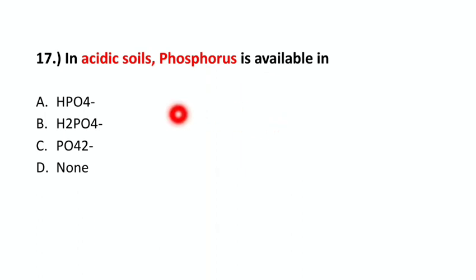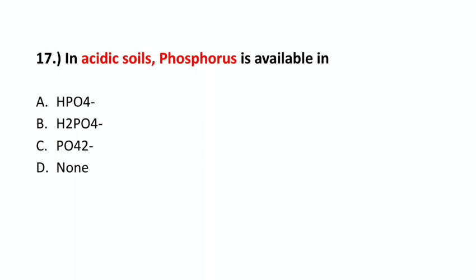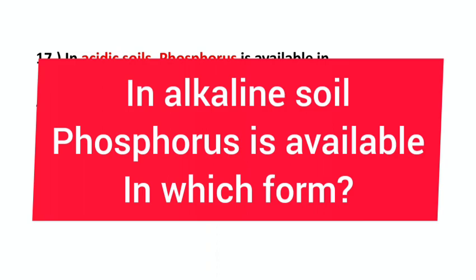Question number 17: In acidic soil, phosphorus is available in which form? The correct option is option B – H2PO4⁻. Question number 18: In alkaline soil, phosphorus is available in which form?